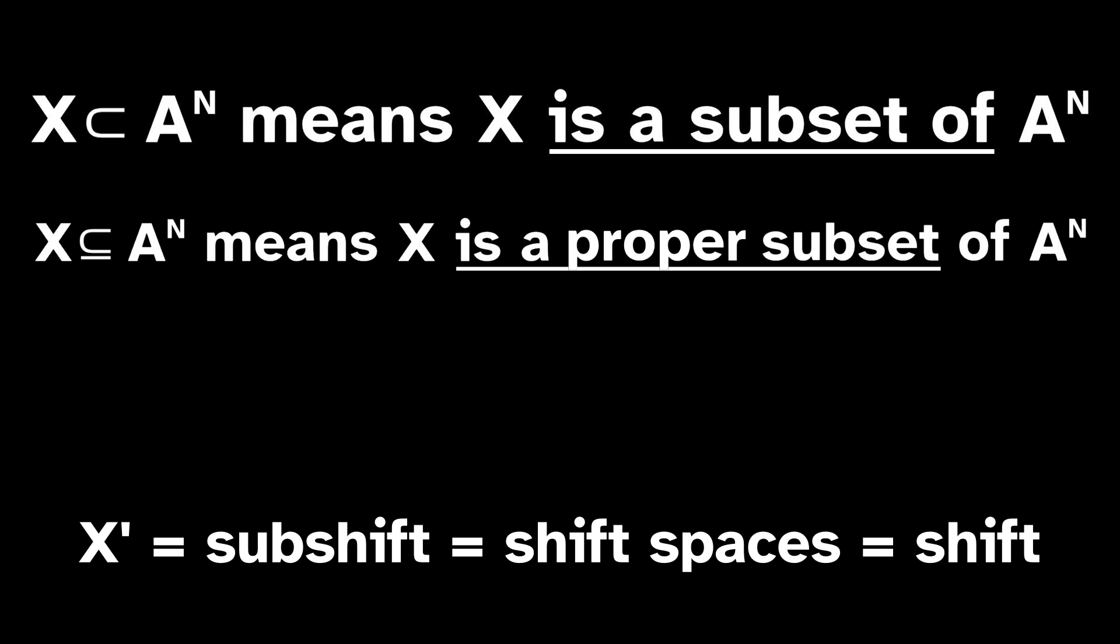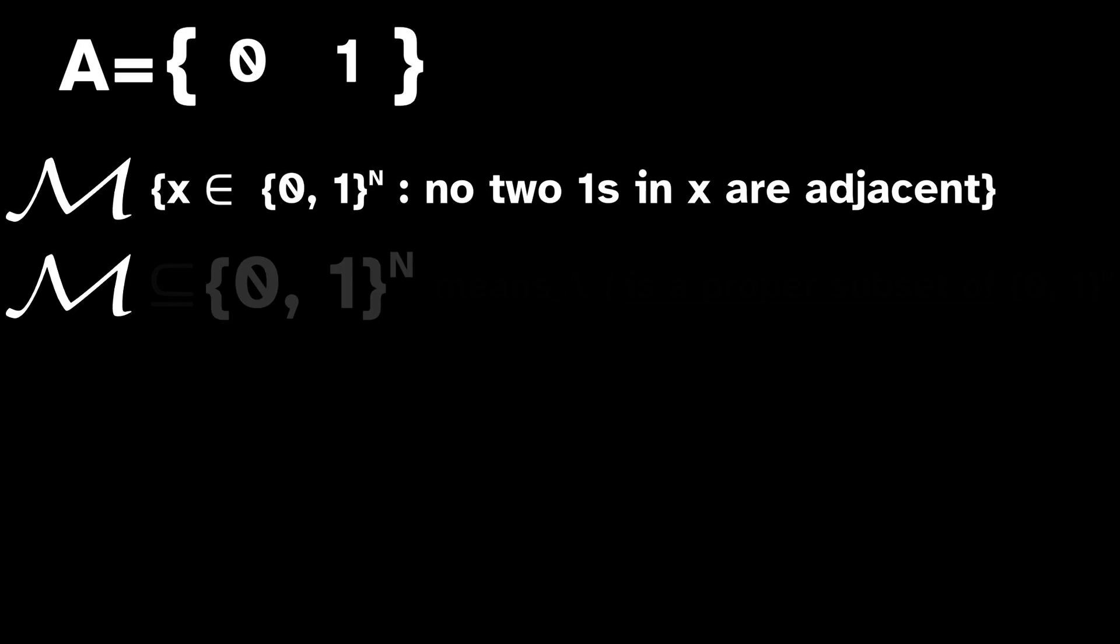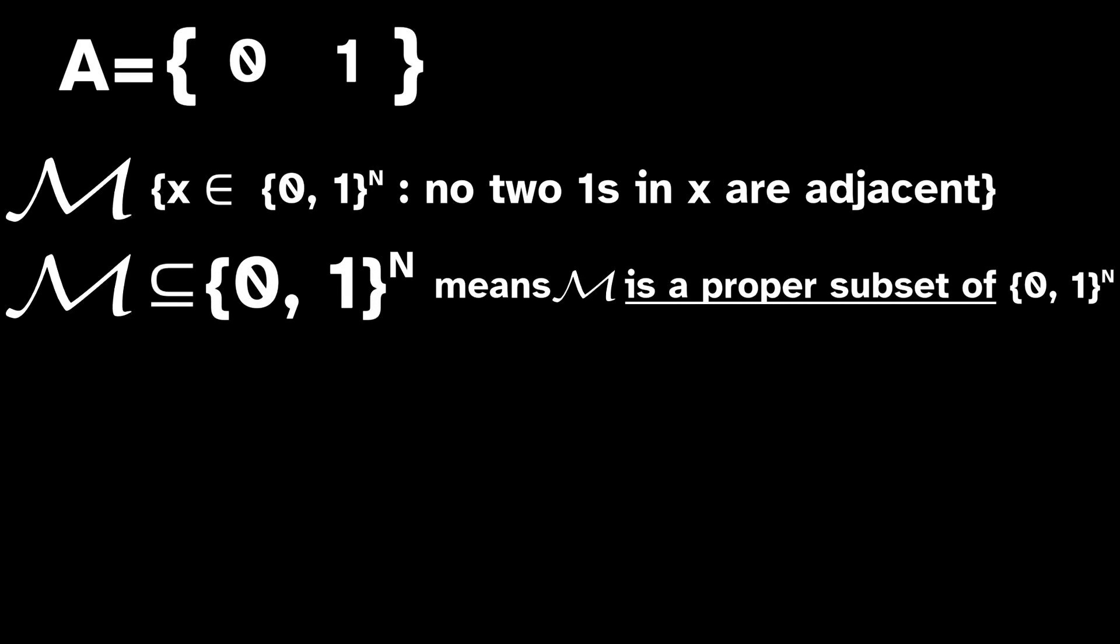Most often, subshifts are constructed or specified by rules. To illustrate, let's go back to our binary alphabet. Let's define a subsystem by the following rule: no two ones anywhere in the sequence are immediately adjacent to each other. The subshift specified by this rule is the set of all binary sequences which satisfy the rule.